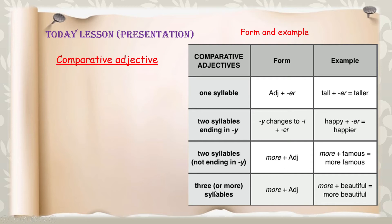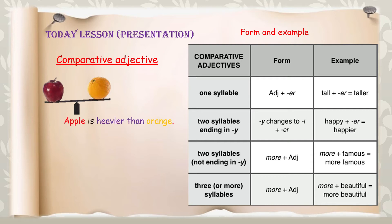For three or more syllables, we use 'more' plus the adjective. For example, 'more beautiful'. Here is an example comparing two fruits — apples and oranges. We can say 'apples are heavier than oranges'. Comparative adjectives are used to compare two things. 'Heavier' is the comparative adjective, and we use the word 'than' when comparing.